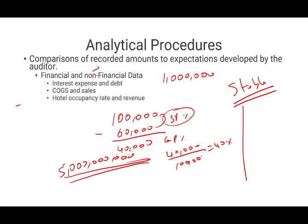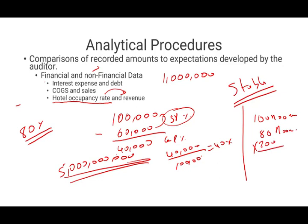You can also look at industry data and non-financial metrics. For example, if you're auditing a hotel in the Poconos where industry occupancy is 80% and they have 100 rooms at $200 per room on average, you can develop an expected monthly revenue of around $16,000. Another comparison is sales per square foot — useful for retailers, though this metric has been declining for most retailers, especially after COVID. Apple, for instance, has the highest sales per square foot.